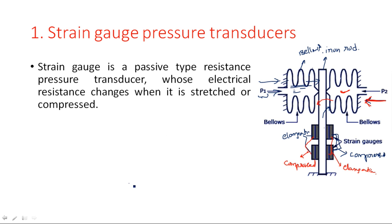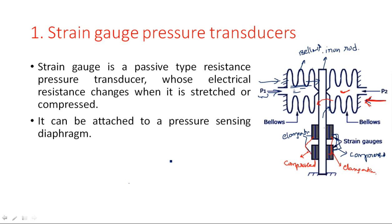A strain gauge is a passive type resistive pressure transducer whose electrical resistance changes when it is stretched or compressed. A strain gauge is essentially a resistive metal wire that has some resistance. Whenever we apply compression or stretching, the resistance of that device varies, so the electrical property varies. It can be attached to a pressure sensing diaphragm, so that the resistance varies in proportion to the applied pressure.